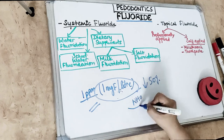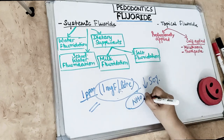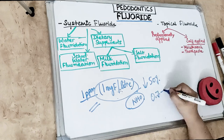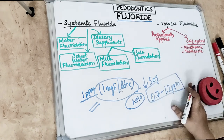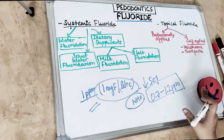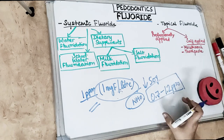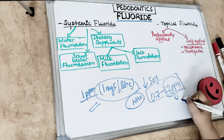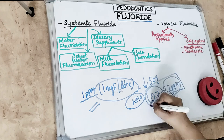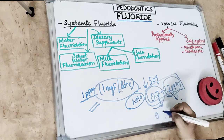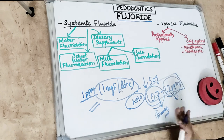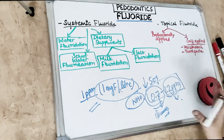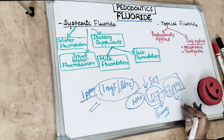The WHO recommendation for the level of fluoride in water is 0.7 to 1.2 ppm, depending on the community, temperature, and climate. In cold climates, up to 1.2 ppm can be given, while for high-temperature regions up to 0.7 ppm is recommended. The WHO established this recommendation in 1971.